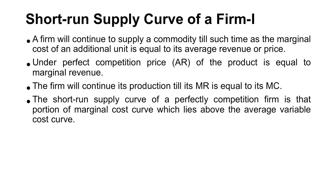The firm will continue to supply a commodity until the marginal cost of an additional unit is equal to average revenue, i.e., price. Under perfect competition, price equals average revenue (AR), and AR equals marginal revenue (MR). The firm will continue production until MR equals MC — MR stands for marginal revenue, MC for marginal cost, and AR for average revenue.